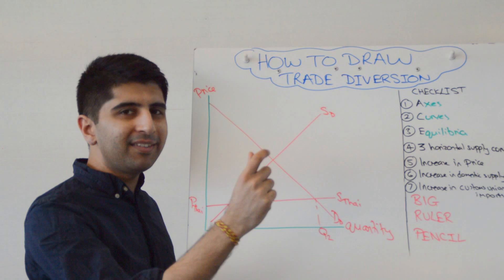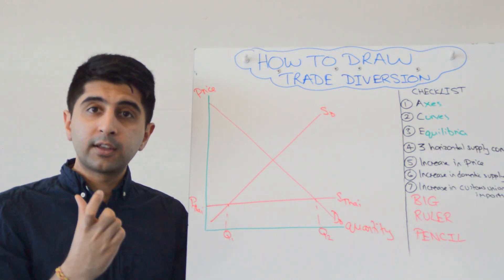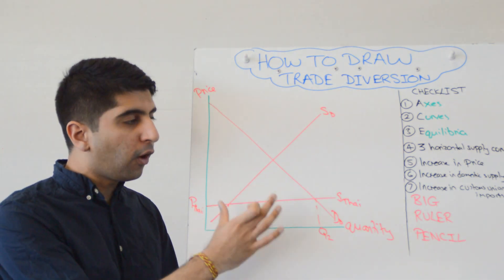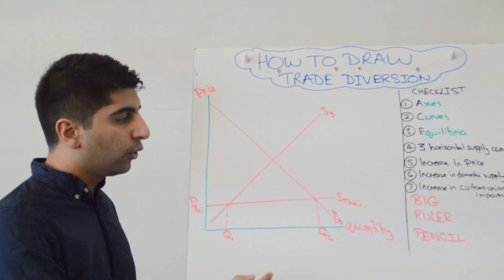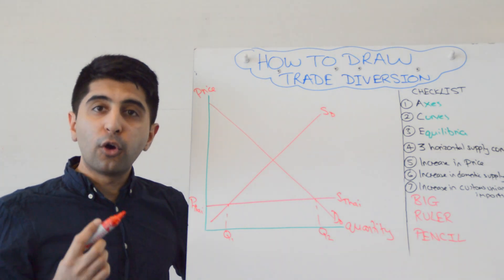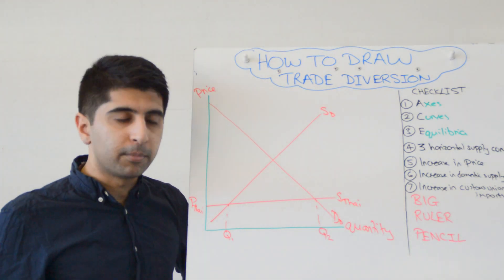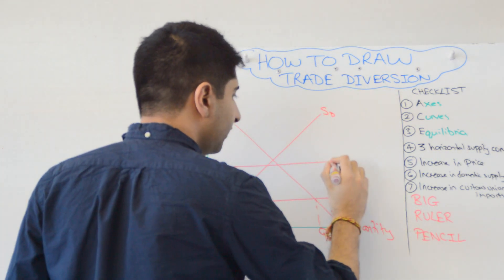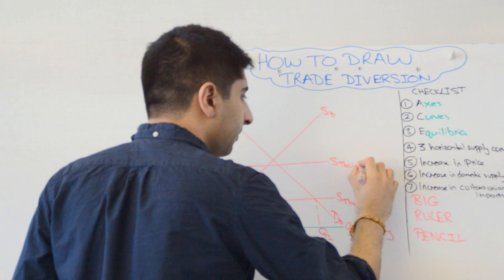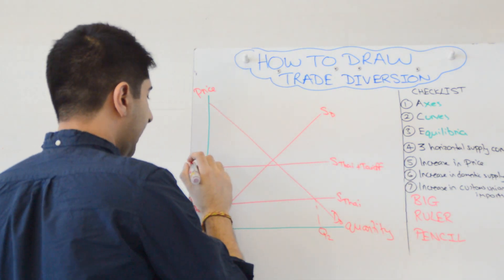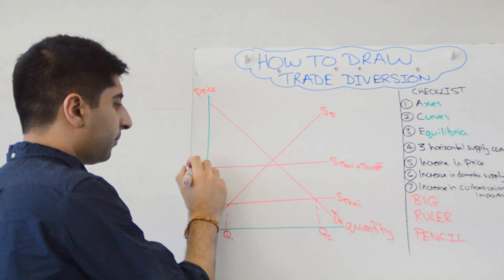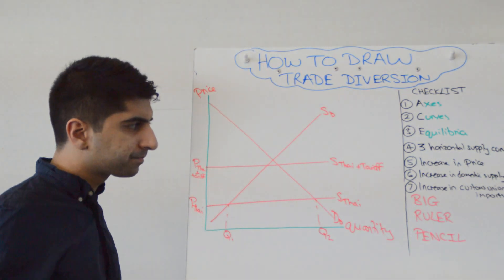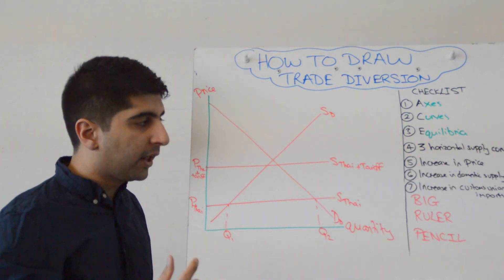But now we're going to assume that this domestic country enters the EU customs union. Now if it enters the EU customs union, what must happen? Well, a common external tariff must be imposed on all imports coming in from non-member countries, i.e. Thailand for example. So now the Thailand supply curve will shift upwards. So you draw that upward shift. So we have supply Thailand plus the common external tariff. And that increases the Thailand price to price Thailand plus tariff. So we've drawn our second horizontal supply curve.